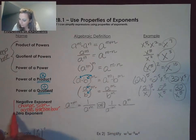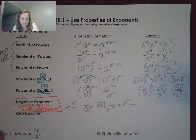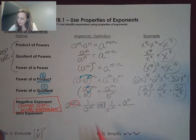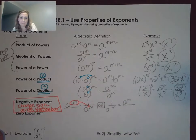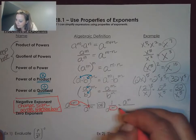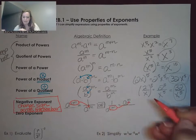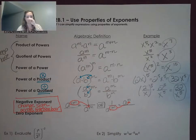The thing to remember with negative exponents is that you basically change sign across the fraction bar. If it's in the numerator, we cross the fraction bar and it becomes positive. If it was in the denominator, we cross the fraction bar and it becomes positive. So anytime you have a negative exponent, you put it across the fraction bar and that turns it into a positive.